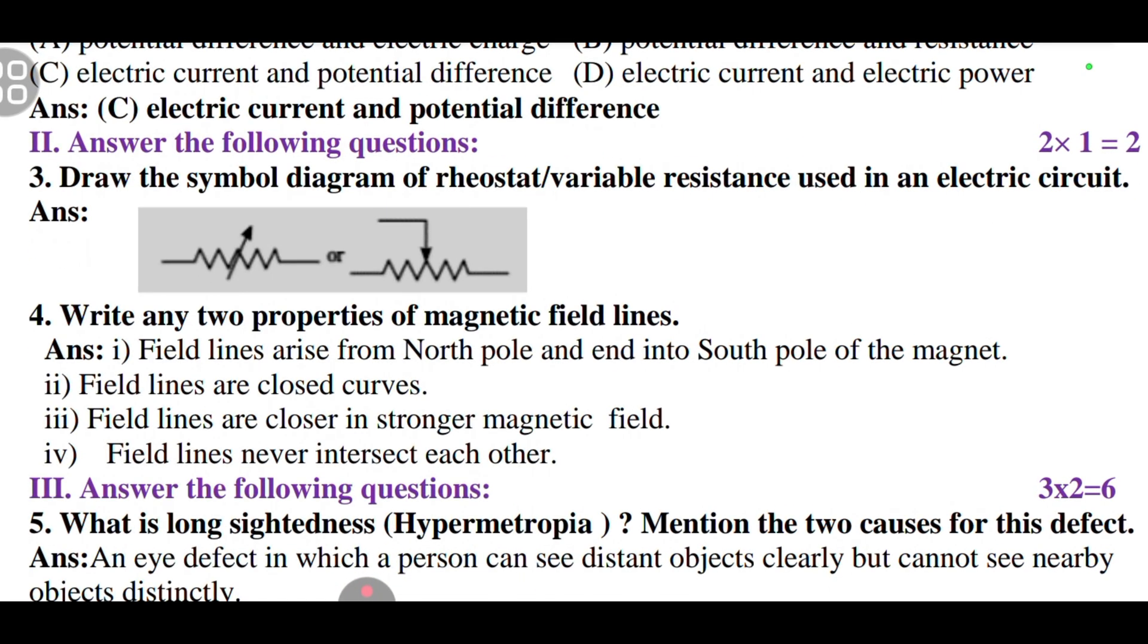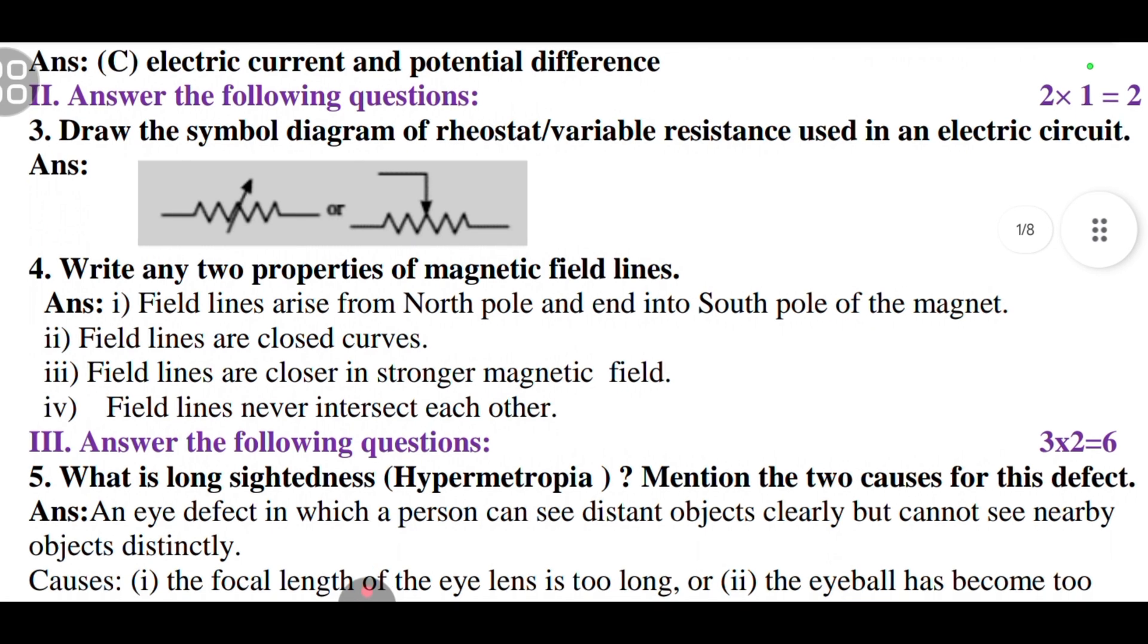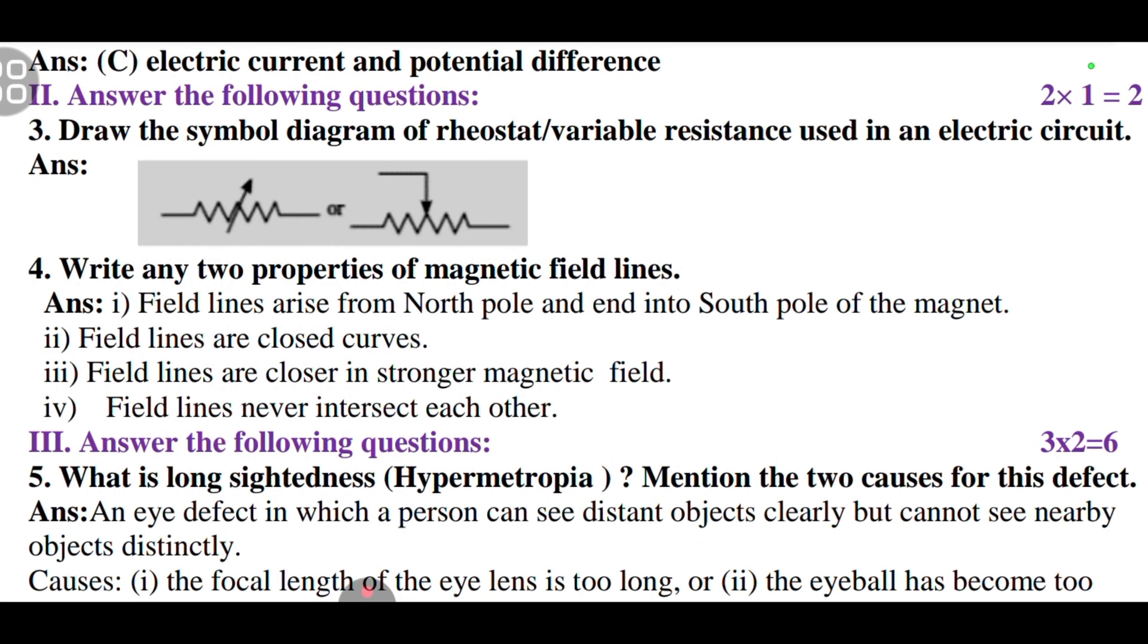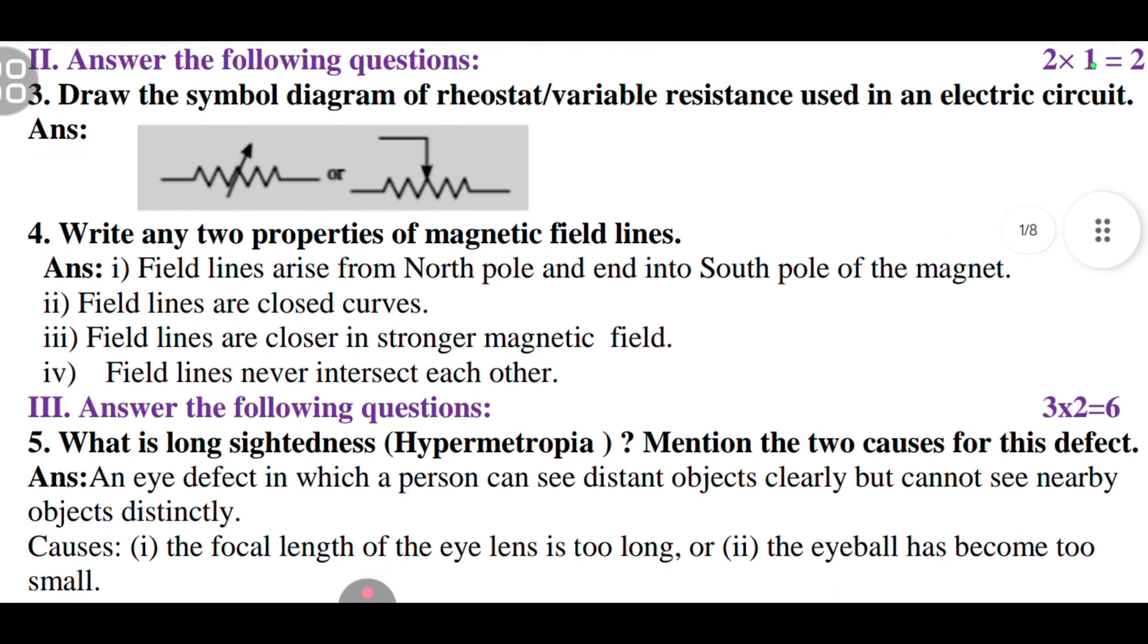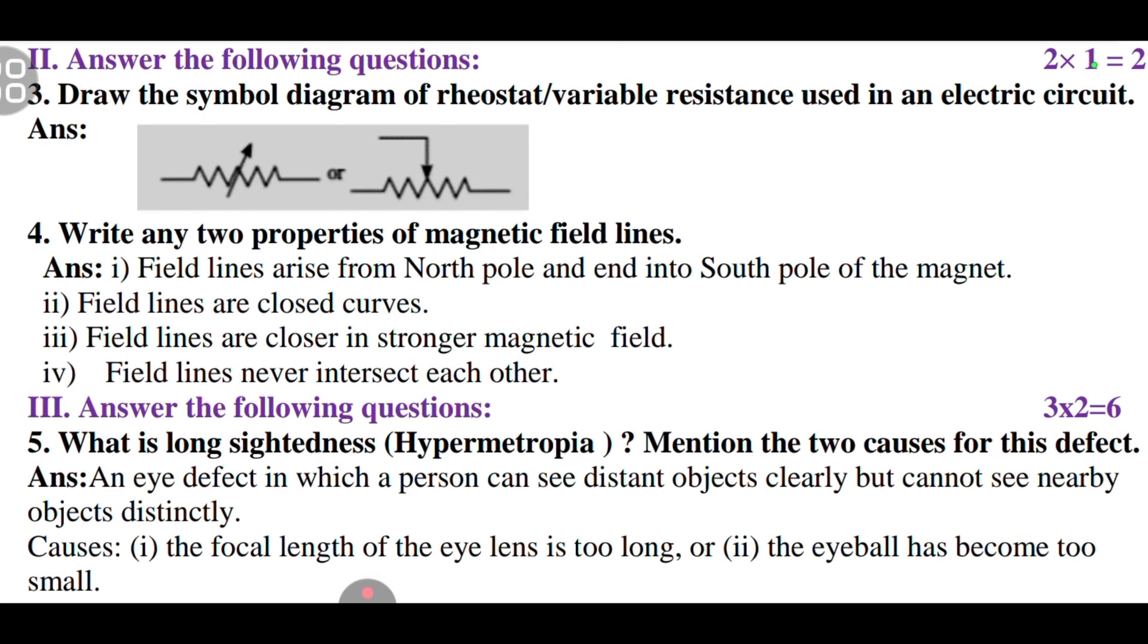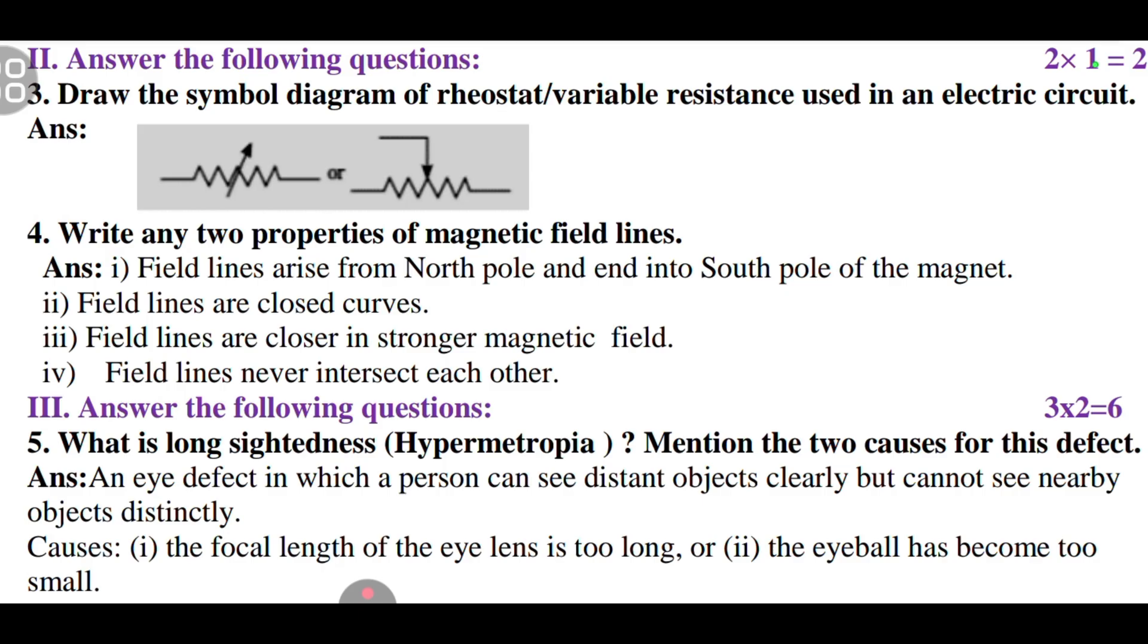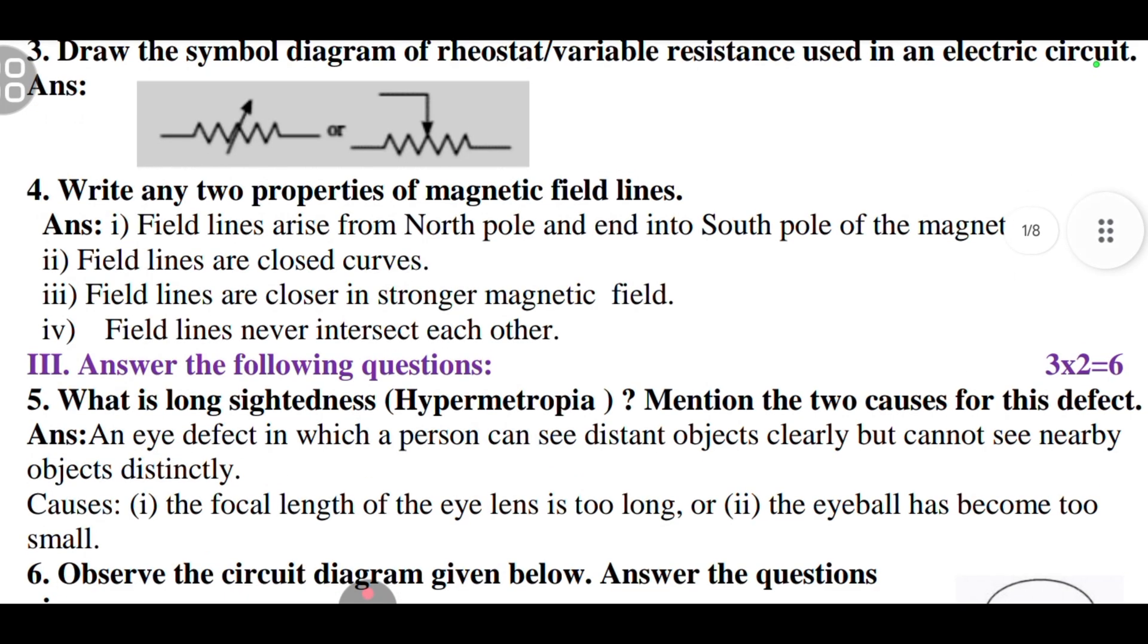Third question: draw the symbolic diagram of a rheostat variable resistance used in the electric circuit. The two symbols there, anyone if you draw, they will give you the full marks. Next, moving to the magnetic field lines.